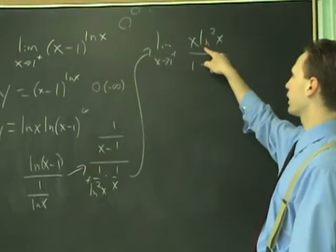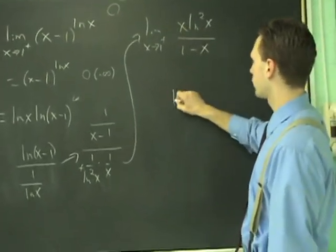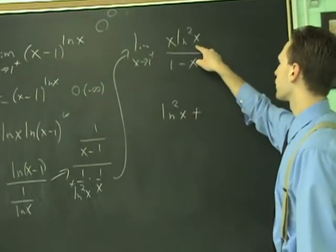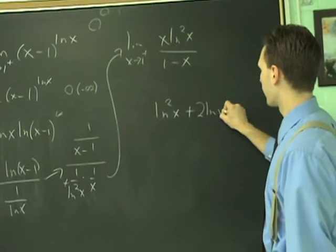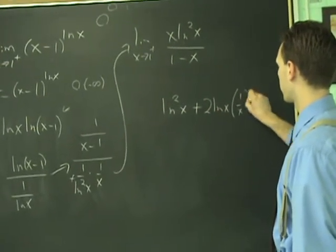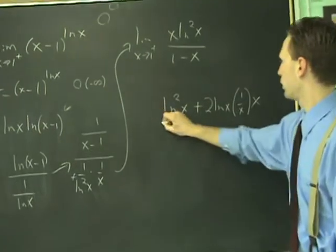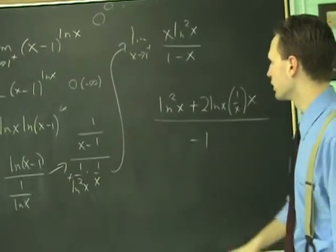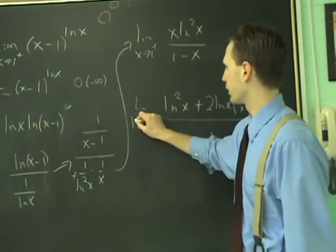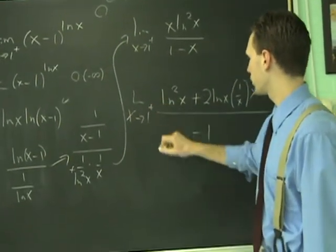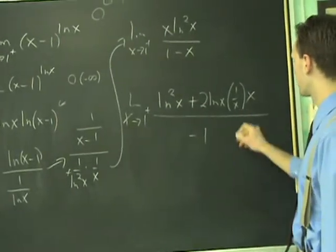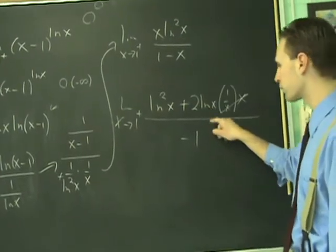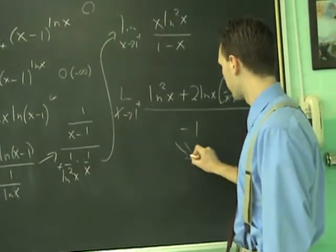So, differentiated to the top, we need the product rule, so that'll be f'g, ln²(x), plus g', which is 2ln(x) times one over x, times f, which is the x. All divided by the derivative of the bottom, which is minus one. And then you're free to do it again, limit as x goes to one from the right, and as you plug in one from here, these x's cancel. The ln of one is zero, plus two times the ln of one, which is also zero. So this whole thing, limit goes to zero.